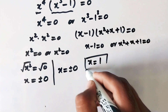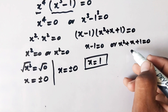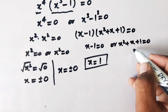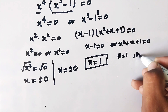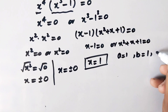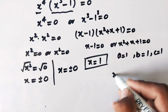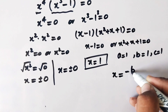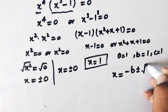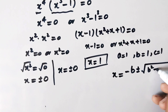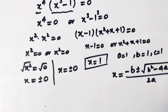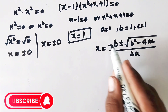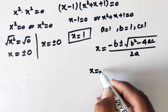On the other side we have a quadratic equation, so we solve it further using the quadratic formula. Here a equals 1, b equals 1, and c equals 1. The formula for x is: x equals minus b plus or minus the square root of b squared minus 4ac, all over 2a.